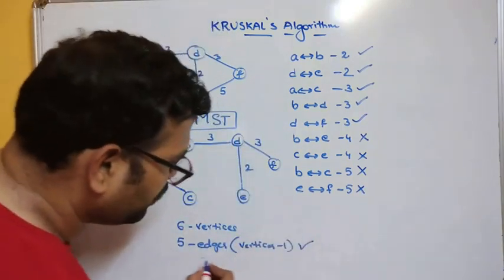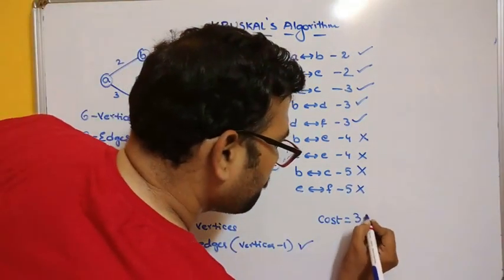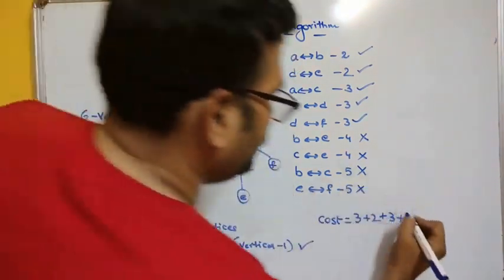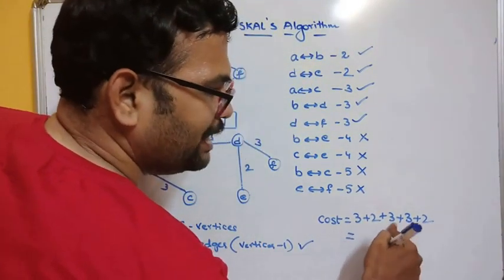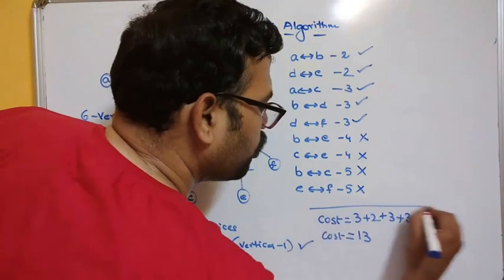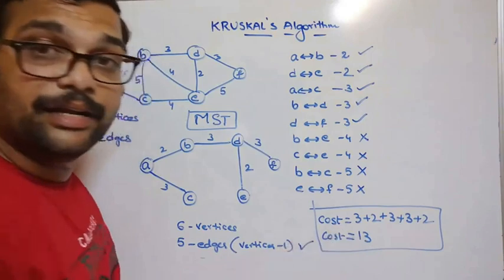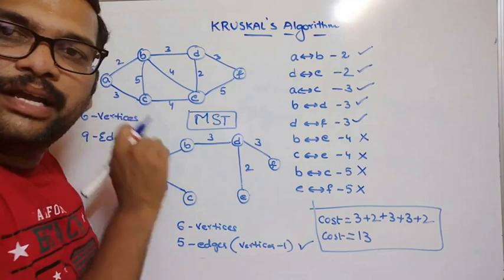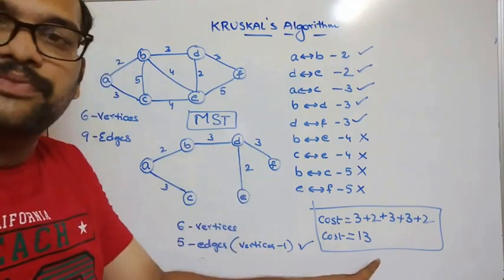The cost of this spanning tree is 3 plus 2 plus 3 plus 3 plus 2, which equals 13. So the minimum cost to construct the spanning tree is 13. This is the same example used in Prim's algorithm, and there we also constructed the minimum cost spanning tree with a cost of 13.